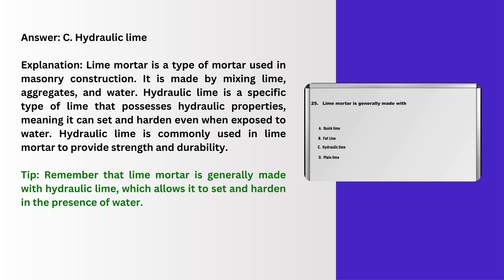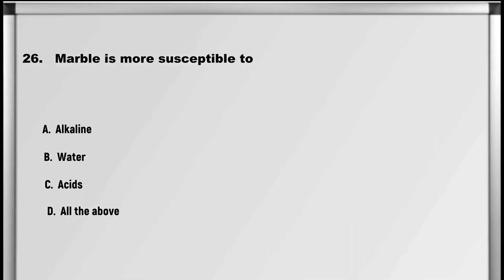Explanation: Lime mortar is a type of mortar used in masonry construction. It is made by mixing lime, aggregates, and water. Hydraulic lime is a specific type of lime that possesses hydraulic properties, meaning it can set and harden even when exposed to water. Hydraulic lime is commonly used in lime mortar to provide strength and durability. Tip: remember that lime mortar is generally made with hydraulic lime, which allows it to set and harden in the presence of water.